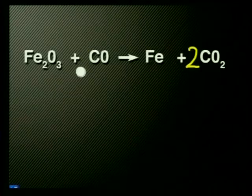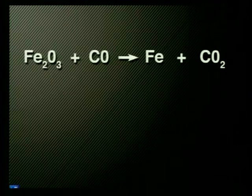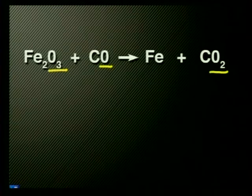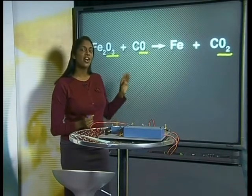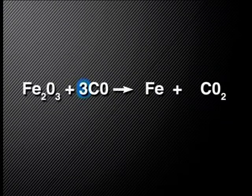Let's start again. Have a careful look at the oxygen atoms on the left-hand side. Notice that the oxygen atoms are found in two compounds — three with the iron and one with the carbon. On the right-hand side, the oxygen atoms are only found in the carbon dioxide. Since carbon dioxide is CO2, there will always be an even number of oxygen atoms in the product. This means we need to find a way to get an even number of oxygen atoms on the left-hand side. This was the hint I gave you at the end of the last lesson. If we add three carbon monoxide particles, this means that there are now six oxygen atoms on the left-hand side. And to balance this, I must write a 3 in front of the CO2.